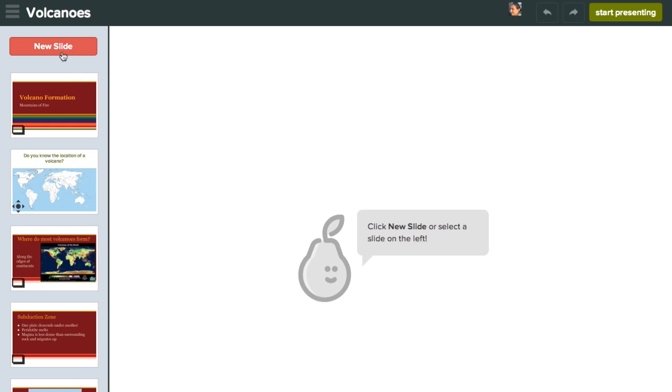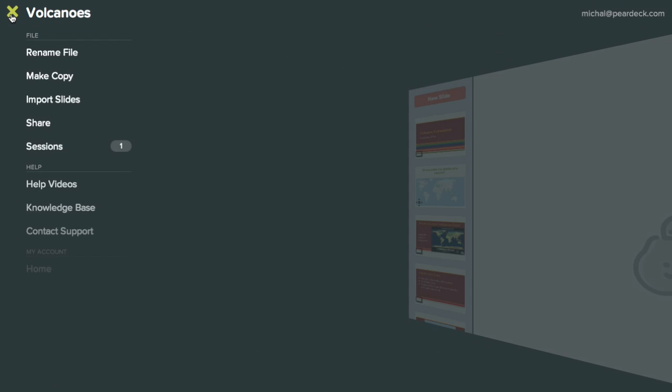Next, open the menu at the top left. Click on the sessions menu. Here you will find every session you have saved. You can click on the session to review student answers. You can also click the options menu for more actions.